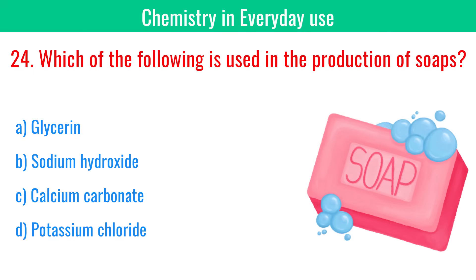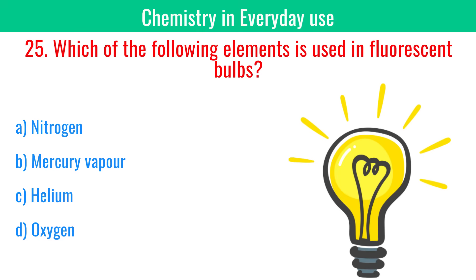Which of the following is used in the production of soaps? Sodium hydroxide. Which of the following elements is used in fluorescent bulbs? Mercury.